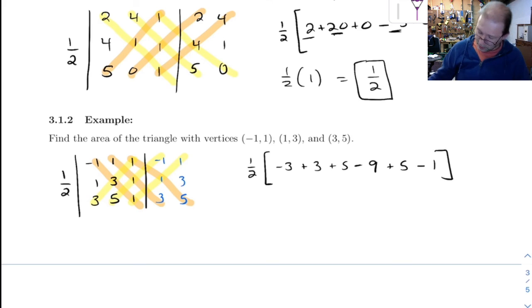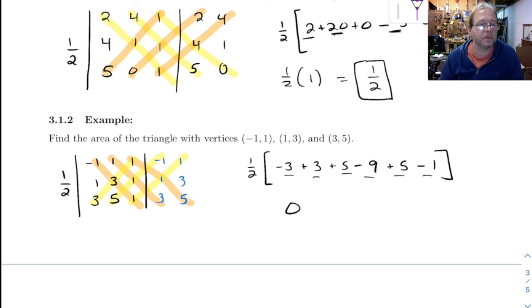So let's see, what is that? Negative 3 plus 3 is 0, 5 plus 5 is 10, minus 9, minus 1, this is 0. So, what that means about these three points, since the area of this triangle, so to speak, is 0, that means that the three points are collinear.